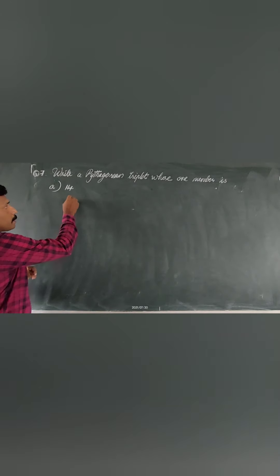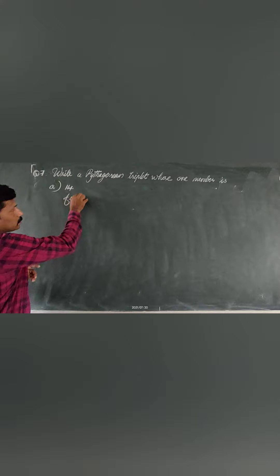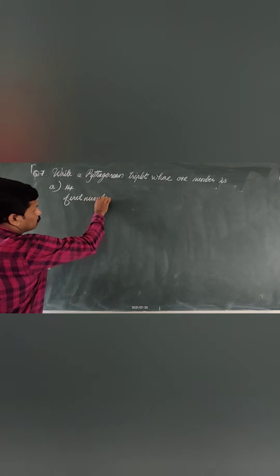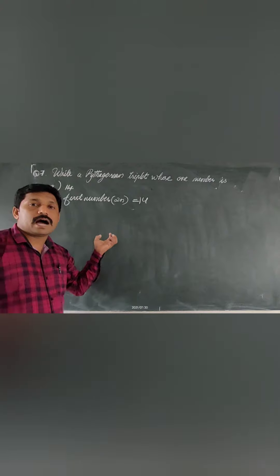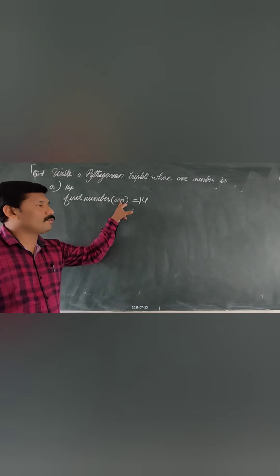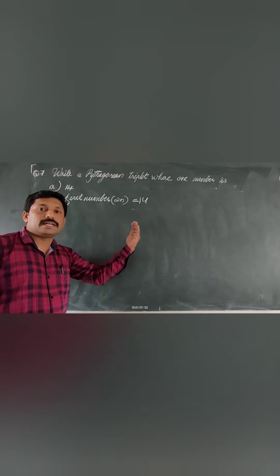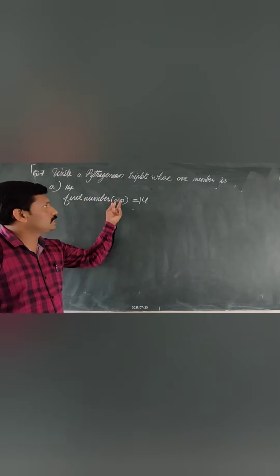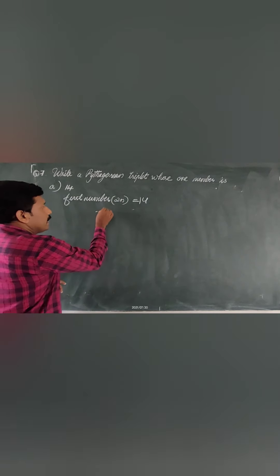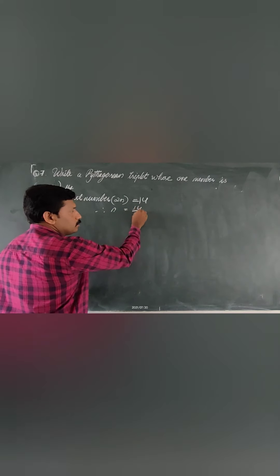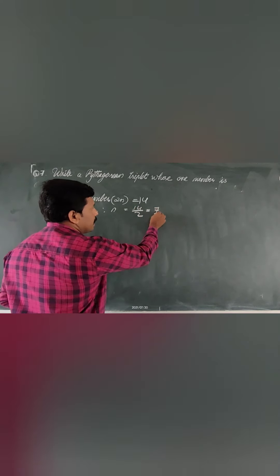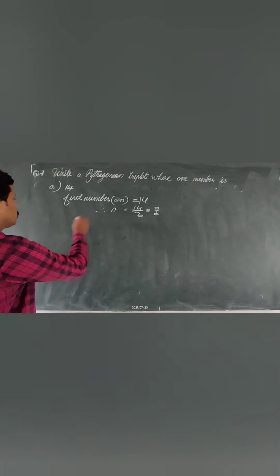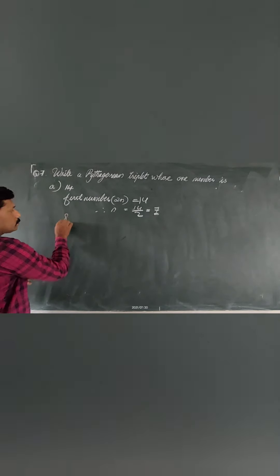One number is given as 14. Since the first number equals 2n, we set 2n equal to 14. To find the other numbers we need the value of n. Therefore n equals 14 divided by 2, which equals 7. So n equals 7. Now we can find the second number.